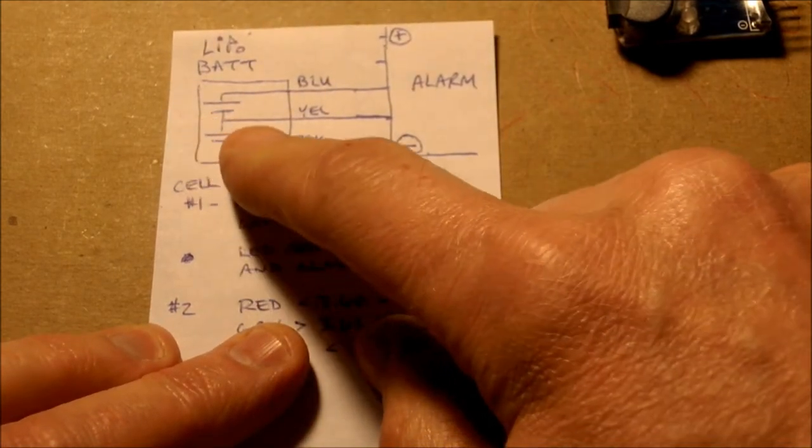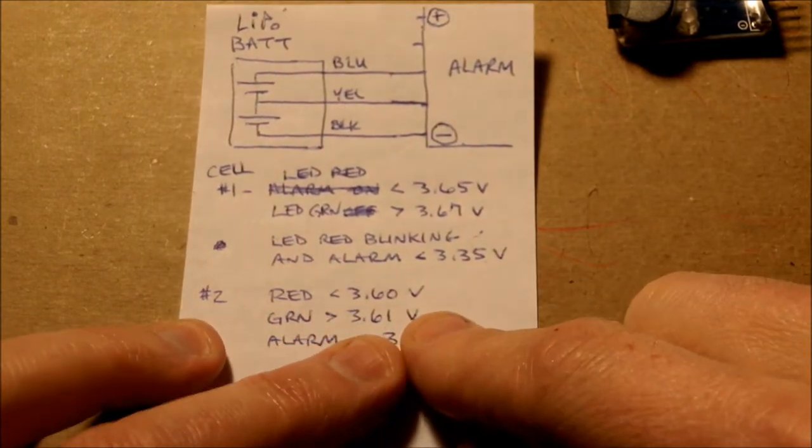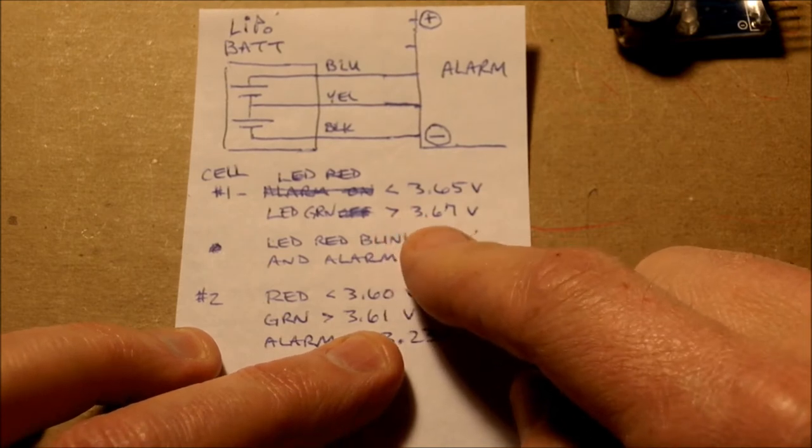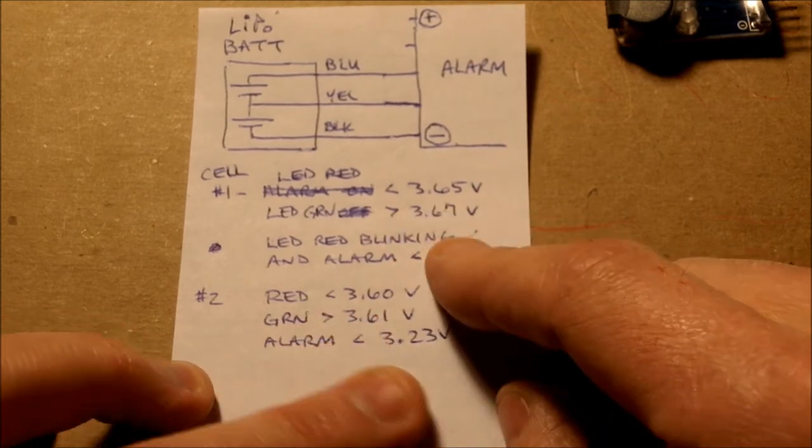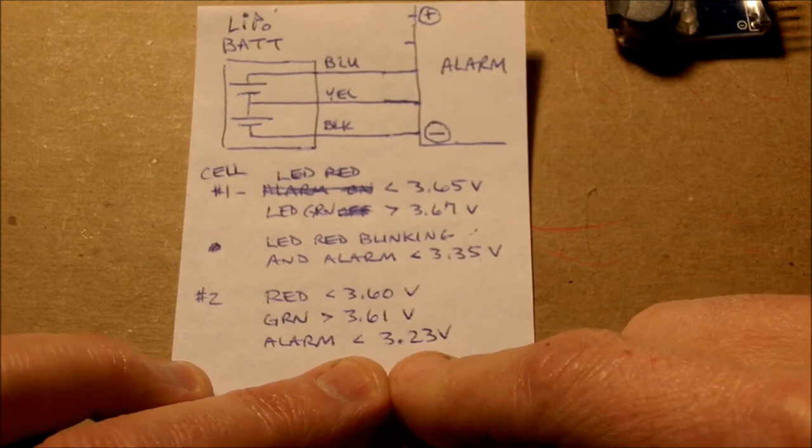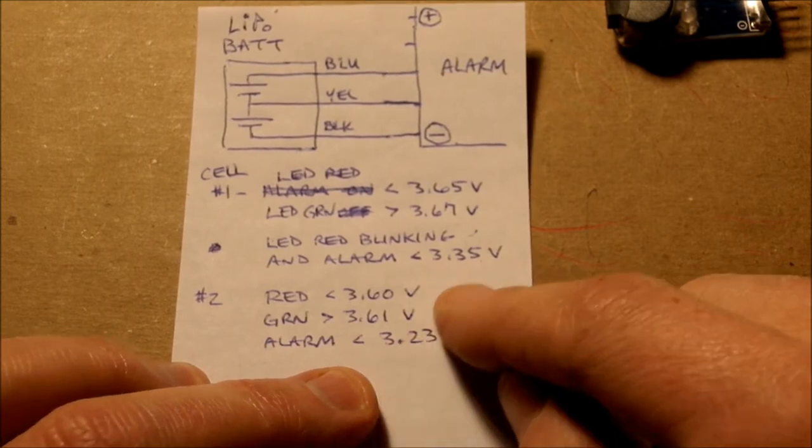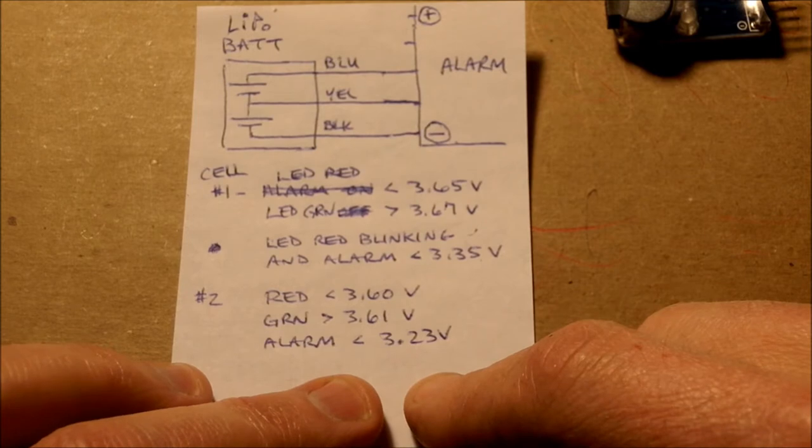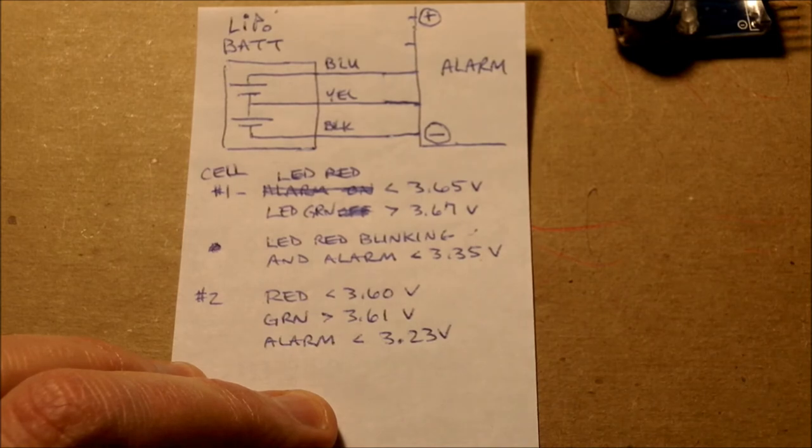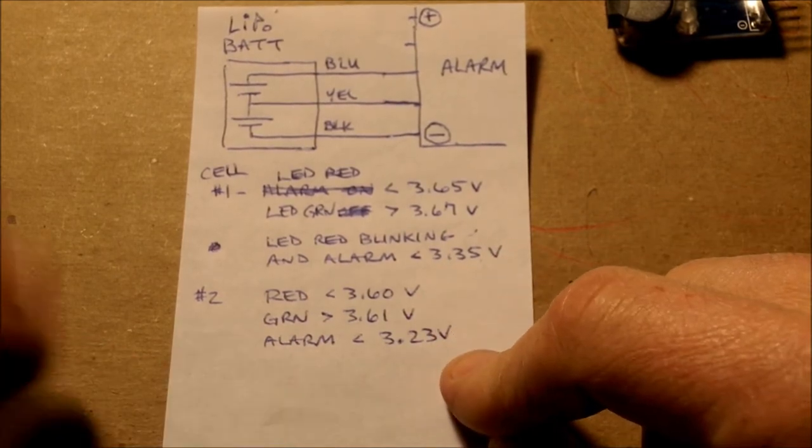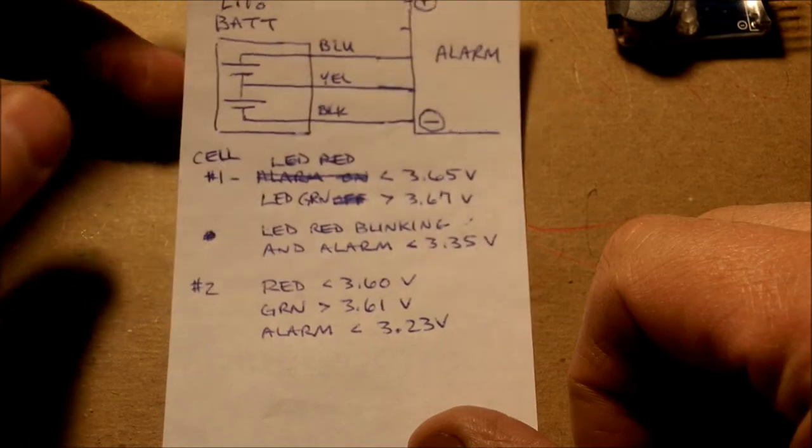The second cell up here, I ran the same testing for the second cell and it's good to fly over 3.61 volts instead of 3.67 volts. So it's a little bit lower. It goes red at 3.6 instead of 3.65. It's a little bit lower. But it alarms at 3.23, which is quite a bit below 3.3 volts. So these are 0.1 volts different, which doesn't seem like much. But when you are at the tail end of a flight, the voltage drops rapidly in a lipo when it's going empty. So that'll make a little bit of a difference. I'm not really concerned about it at this point though. But that's not too bad. It's accurate enough to meet my expectations.